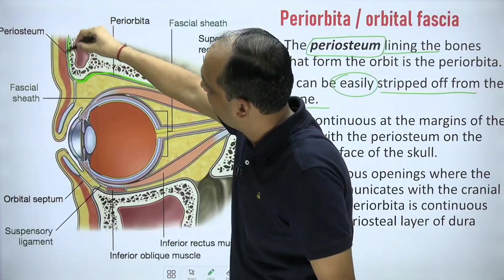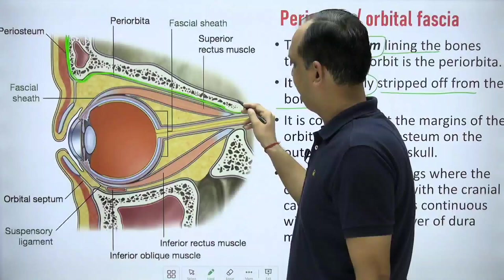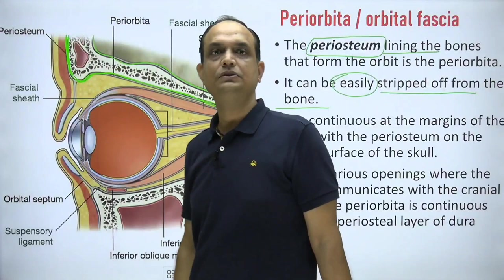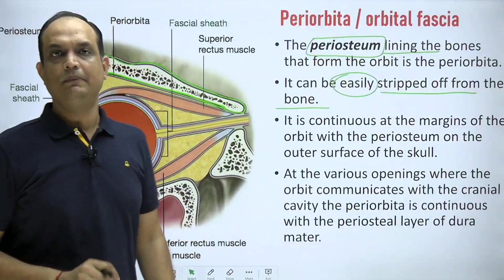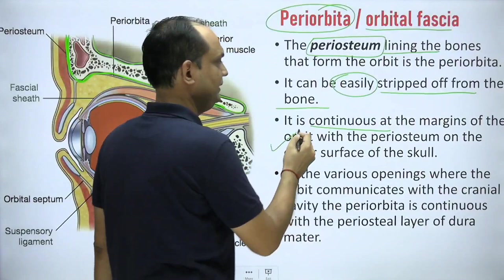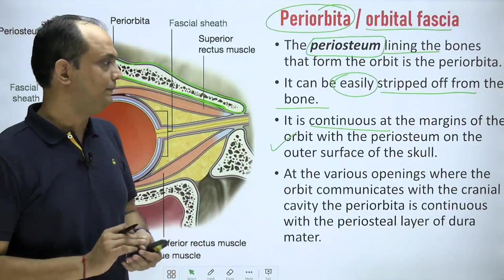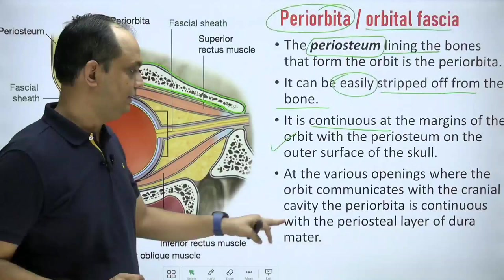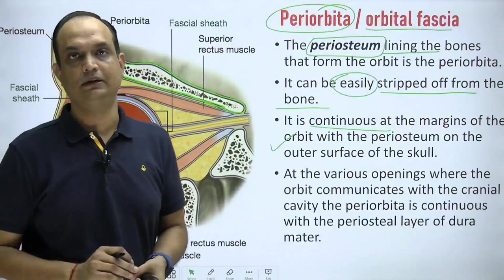At the margin, the periosteum comes out and continues with the periosteum on the outer side. Through this gap, it will continue with the periosteum on the inner side of the skull, which is known as the endosteal layer of dura mater. So periorbita or orbital fascia is simply another name for the periosteum, and it continues at the orbit margins with the periosteum on the outer side of the skull.